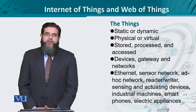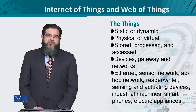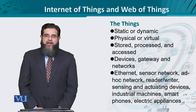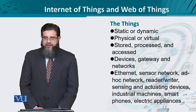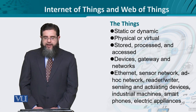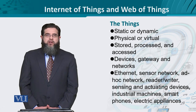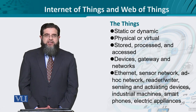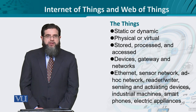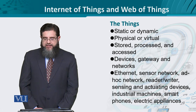The underlying technologies which facilitate the transmission of data coming from the things themselves are also things. For example, Ethernet technology and all the hardware and infrastructure that realizes Ethernet, sensor networks, ad hoc networks, reader and writer — that is, the subscriber or the publisher — sensing and actuating devices, industrial machines, smartphones, electrical appliances, software, plug-ins — you name a thing.